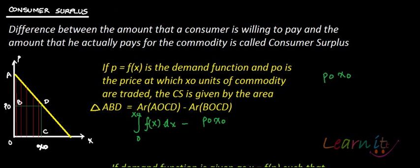He is paying this much — the green area. Even if you reduce this green area from the red area, the red area is more. And this extra red area is basically the consumer surplus which he is going to get from consuming X naught units of the commodity.